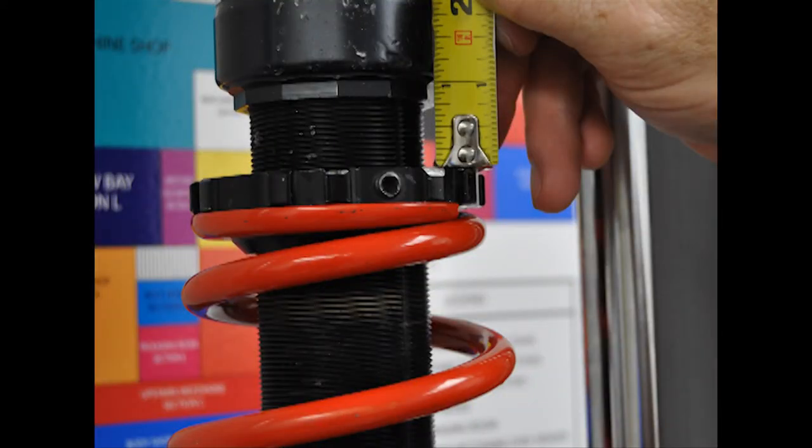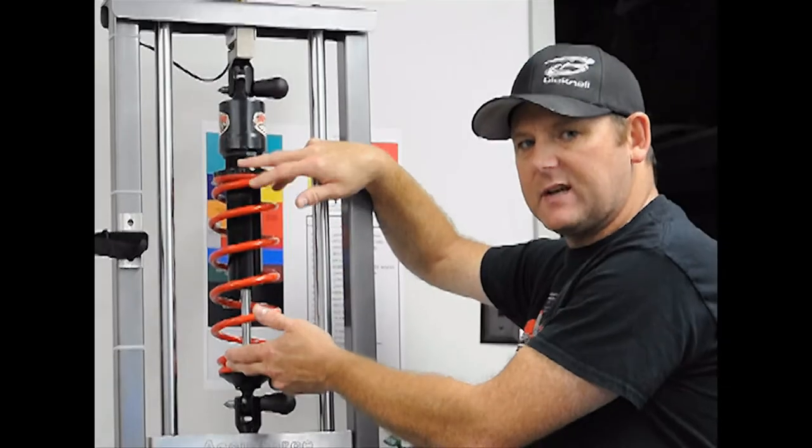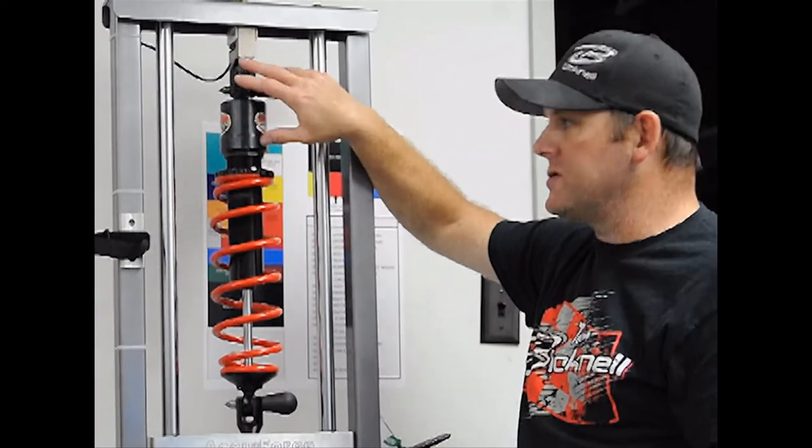I've compressed it one inch. My center to center is still 18 inches and my load number is 160 pounds. So why is it 160 pounds?